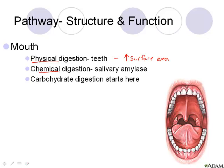The next type is chemical digestion, where enzymes are used. The enzyme we have in our mouth is called salivary amylase, and it breaks down starch into maltose. This is the first time anything gets broken down, and it's carbohydrates — there's no lipid breakdown and no protein breakdown in the mouth.